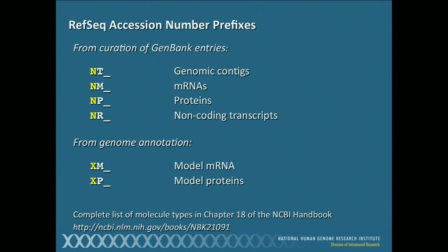Some entries arise from genome annotations — taking these genomic contigs, the NT entries, and using computational methods, you can predict the model mRNAs that come from this sequence and, in turn, the model proteins that come from these model mRNAs. The most important thing to take away from this slide: entries that start with N have been directly sequenced or experimentally determined. The ones with X's arise from predictions. If you get back a set of results and the only things available are the X's, that's fine — keep it in the back of your head that they haven't necessarily been verified. Always go for the N's when you can.